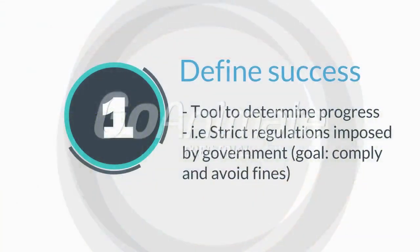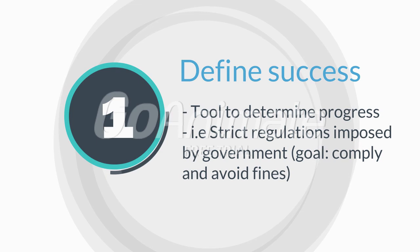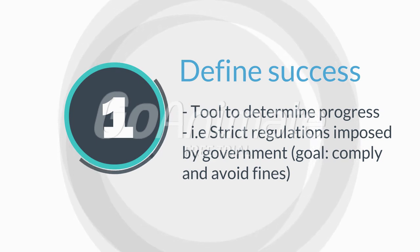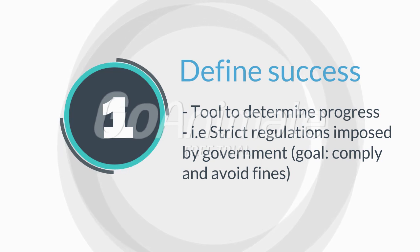Step 1: Define success. This acts as a tool to determine your progress. For example, the government imposes strict environmental regulations, so the company's goal is to comply and avoid fines.